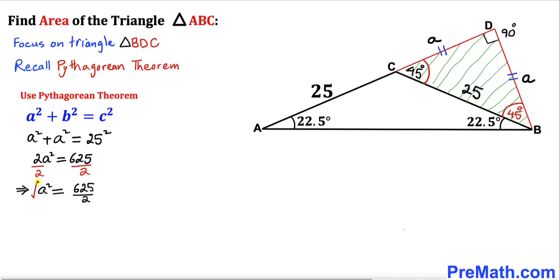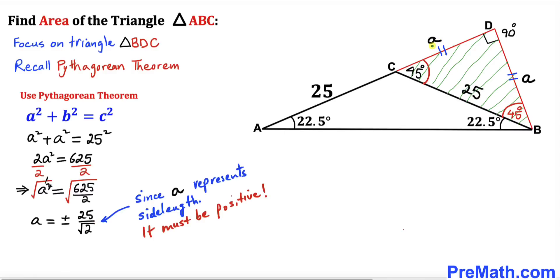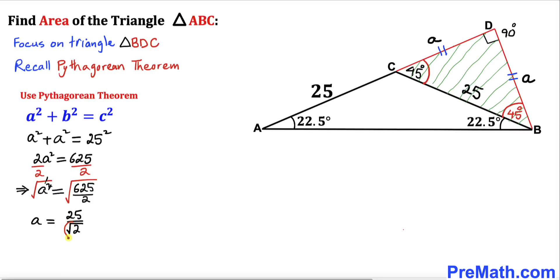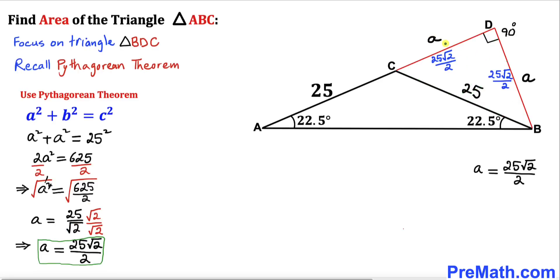Let's undo the square by taking the square root of both sides. Since a represents a side length it must be positive, so a = 25 divided by √2. Since we cannot leave a radical in the denominator, we rationalize: a = 25√2 divided by 2.